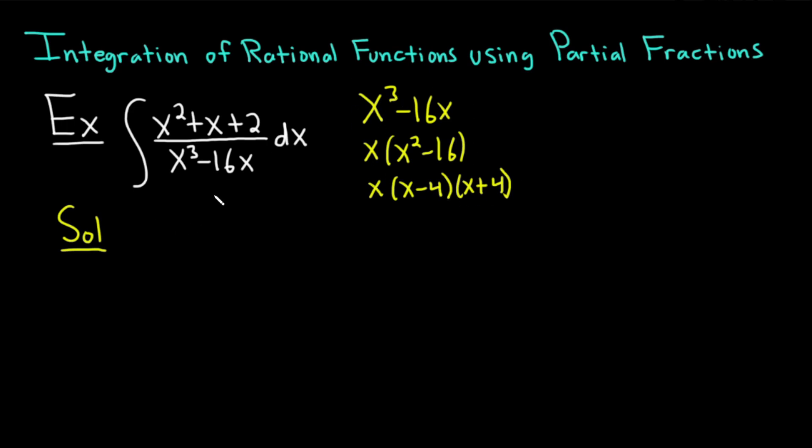Now what we're going to do is we're going to rewrite our integrand, but I'm going to write it in factored form. I'm going to replace the bottom x cubed minus 16x with x times x minus 4 times x plus 4. So we have x squared plus x plus 2 over x times x minus 4 times x plus 4.